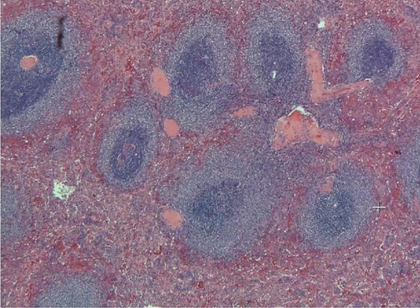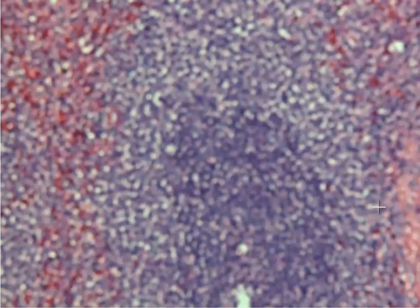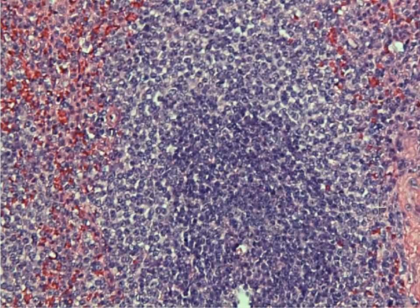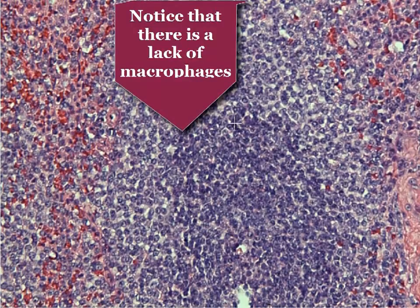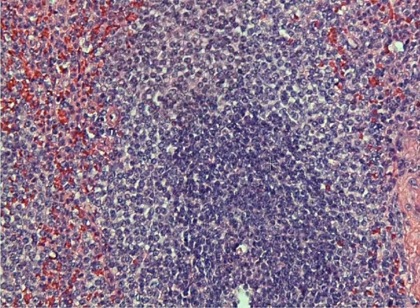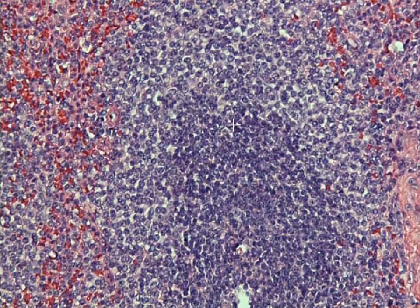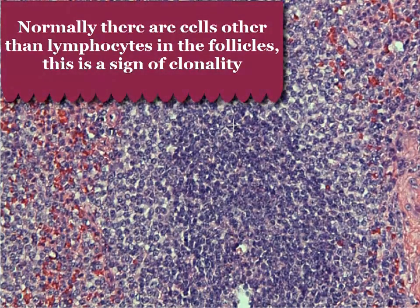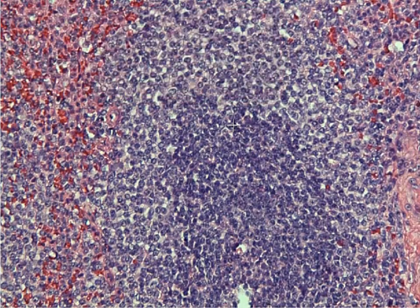You really have to go down to higher power to appreciate what's going on in these tumors. If you look at the little follicles, what you'll notice is that they're composed of a very uniform population of slightly enlarged B cells. These are the neoplastic B cells that you can see in this case. If you were to do flow cytometry, they'd be positive for CD10 and CD20, which are B cell markers. You can also do immunostains to figure this out as well.